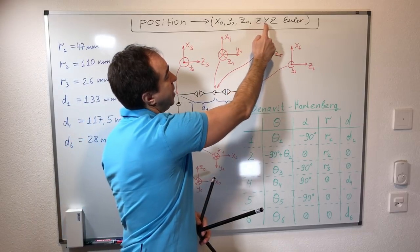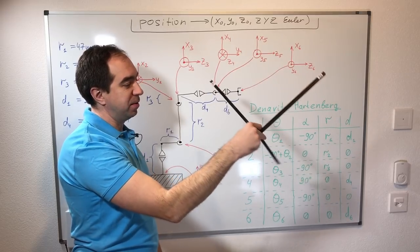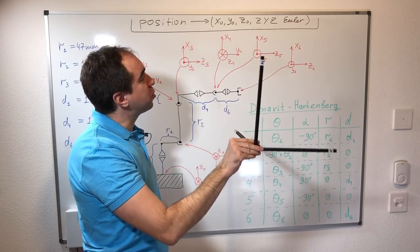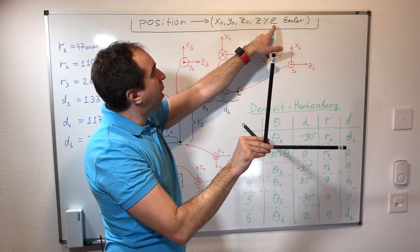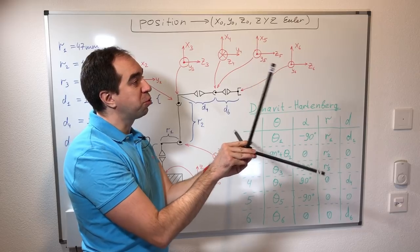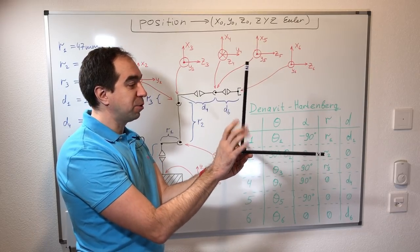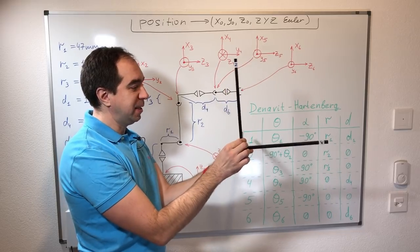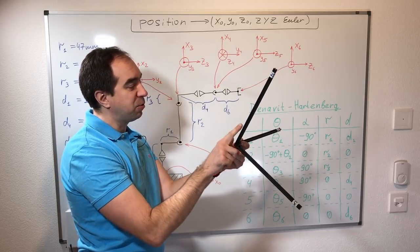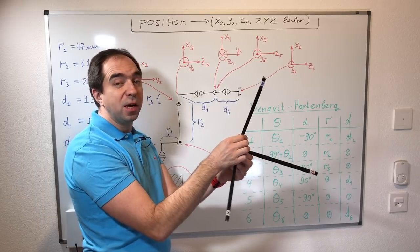The Z, Y, Z Euler angles give you the orientation of this coordinate system. What does the Z-Y-Z Euler system mean? It means that in order to go to the desired orientation, first we rotate the coordinate system around the z-axis, afterwards around the y-axis, and afterwards around the z-axis again. Like this we can rotate the gripper in any direction.